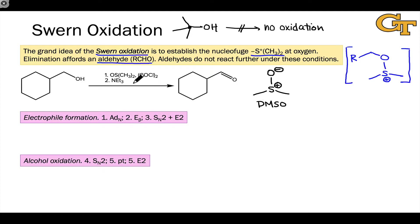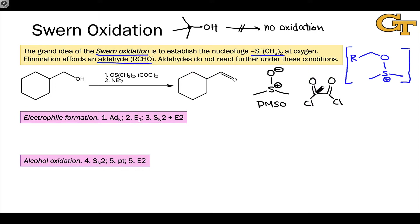The second reagent is oxalyl chloride — COCl quantity 2 — meaning the two carbonyl carbons in the COCl groups are linked to one another. It's a double acyl chloride with the two carbonyl carbons connected. This makes it a very strongly electrophilic molecule at those carbons. It is a derivative of oxalate in which the OH or O⁻ groups have been replaced with chlorines.